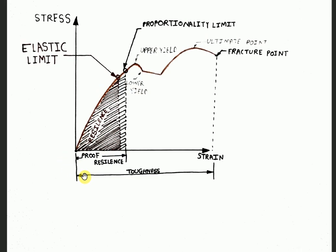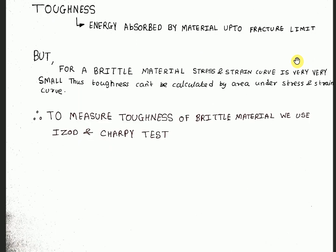Further, if I consider the area under the stress-strain curve up to the fracture point, then it's called toughness. Thus toughness is nothing but the energy absorbed by the material up to the fracture limit. But for a brittle material, the stress-strain curve is very small. The toughness cannot be calculated by measuring the area under the stress-strain curve.